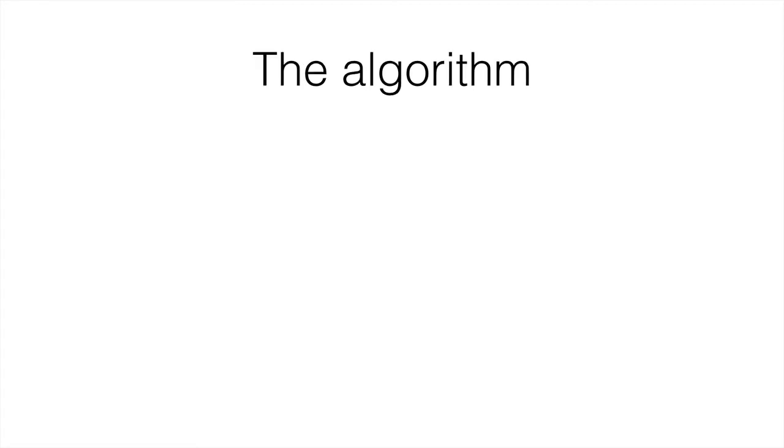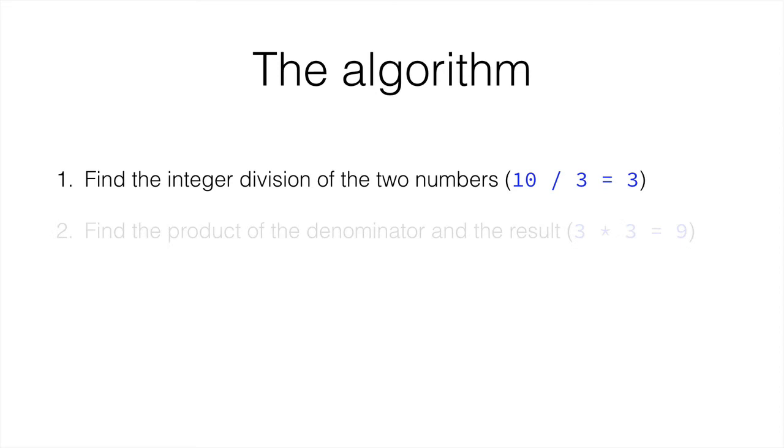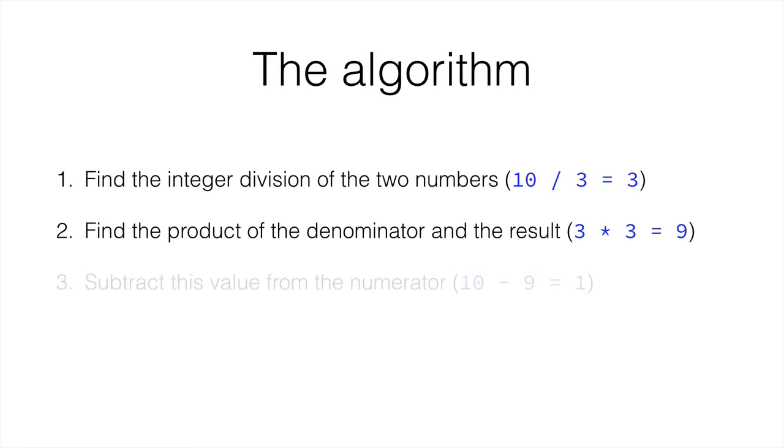So, an overview of the algorithm. First, we find the integer division of the two numbers we are going to divide. 10 divided by 3 equals 3. Then, we find the product of the denominator and the result. 3 times 3 is 9. We subtract this value from the numerator. 10 minus 9 equals 1. And this value is the remainder.